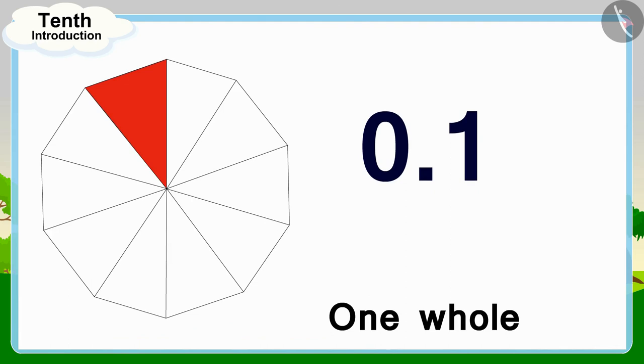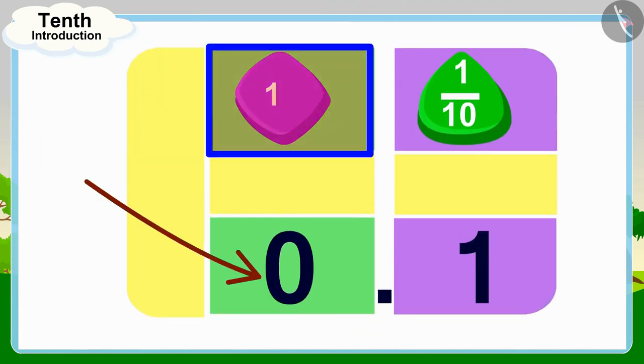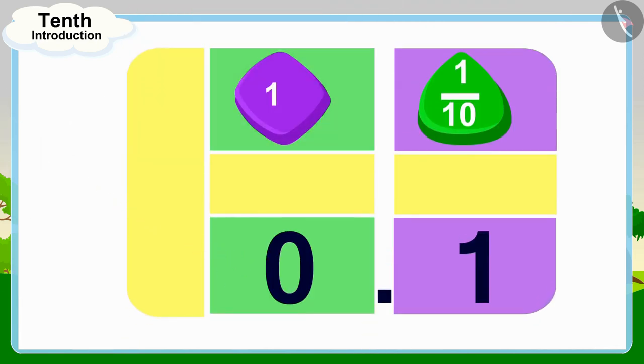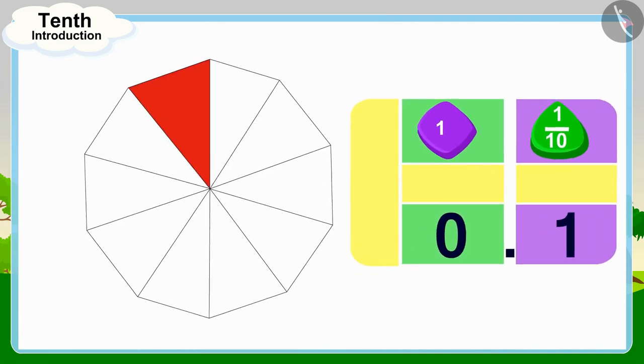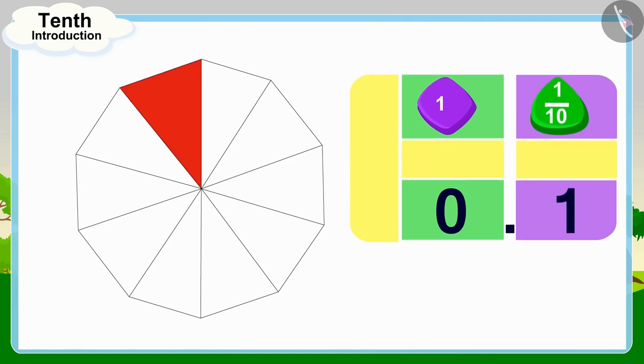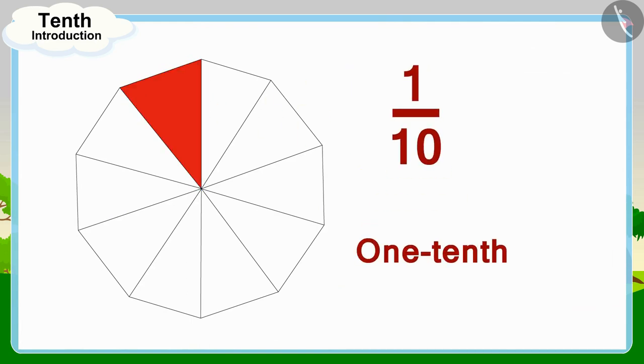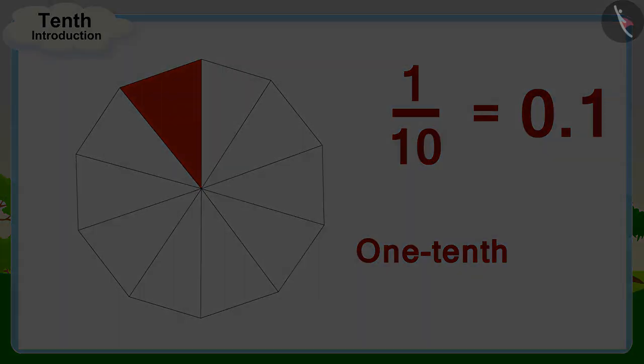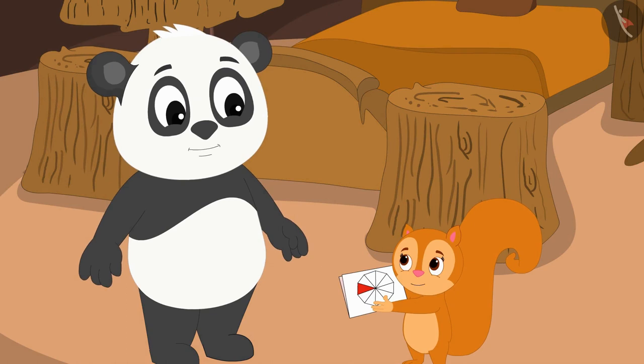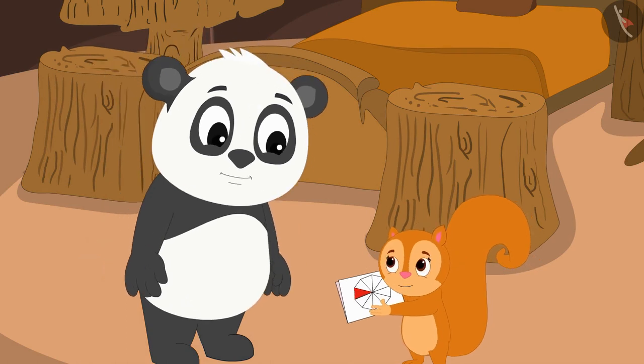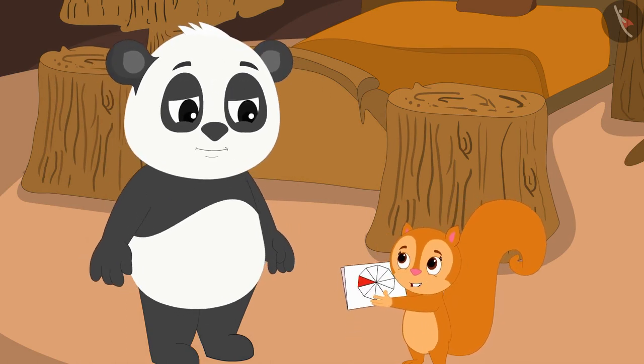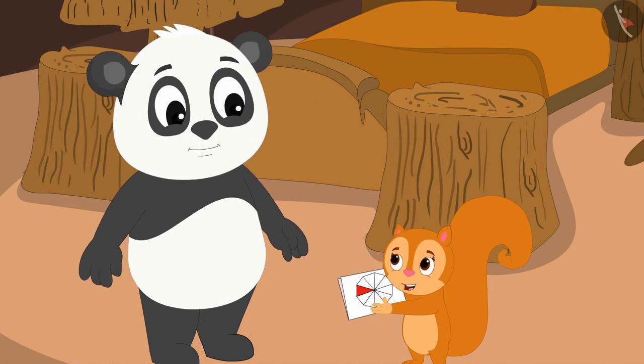In this way we write one tenth part of your whole flower as 0.1. Wow Golu, this is so much fun! Now you quickly paint these remaining parts too so that we can give it to Babban.